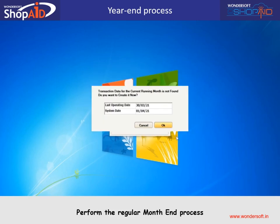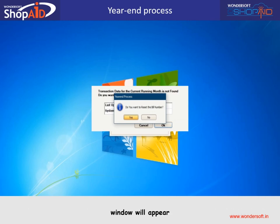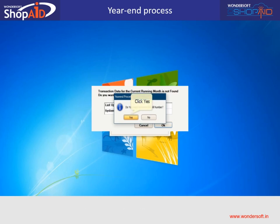Perform the regular month-end process. A confirmation message box which says 'Do you want to reset the bill number?' would appear. Click Yes to reset the bill number.